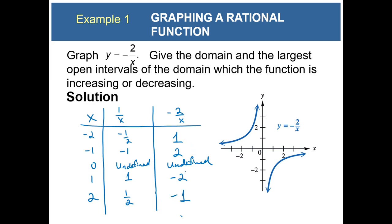From the table you can see the graph is increasing from negative infinity to zero and increasing from zero to infinity. There are still vertical and horizontal asymptotes.